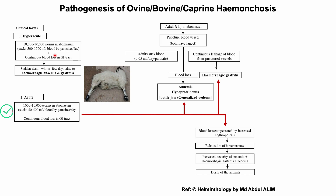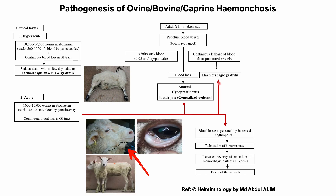Blood loss in acute cases is also significant. There may be up to 10,000 parasites sucking up to 0.5 liters of blood per day along with additional leakage of blood in the gastrointestinal tract, resulting in hemorrhagic anemia and gastritis. Due to generalized hypoproteinemia, fluid accumulates in the intermandibular space, known as bottle jaw. In acute cases, blood loss is compensated by increased erythropoiesis, but over time the bone marrow becomes exhausted, resulting in increased severity of anemia, gastritis, and edema. Consequently, some animals may die at this stage as well.